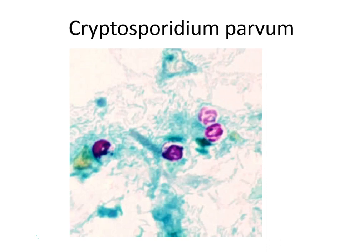Cryptosporidium parvum is 4 to 6 micrometers — very small and sometimes hard to see. It has a thick cell wall with a halo where part doesn't stain, and 1 to 6 dark refractile granules. It usually comes from contaminated water and causes patients to lose 3 to 6 liters of fluid per day. The modified acid-fast stain is used to identify it.